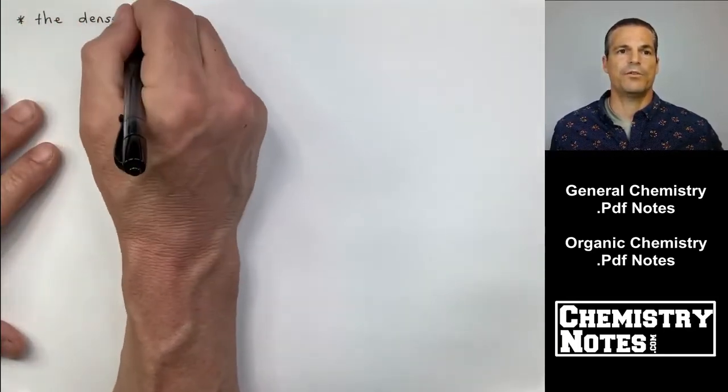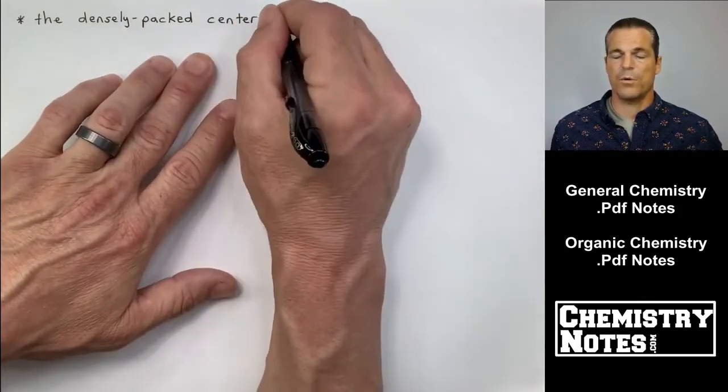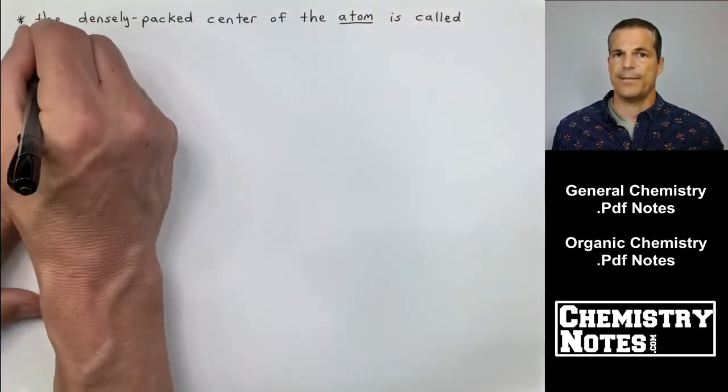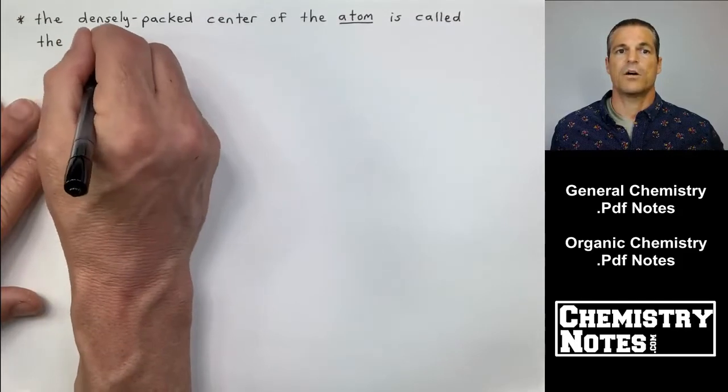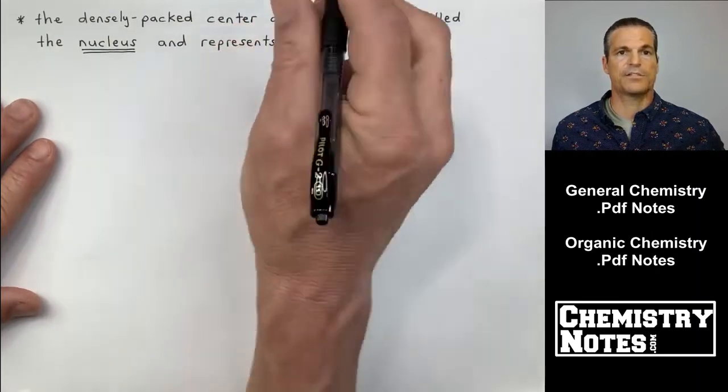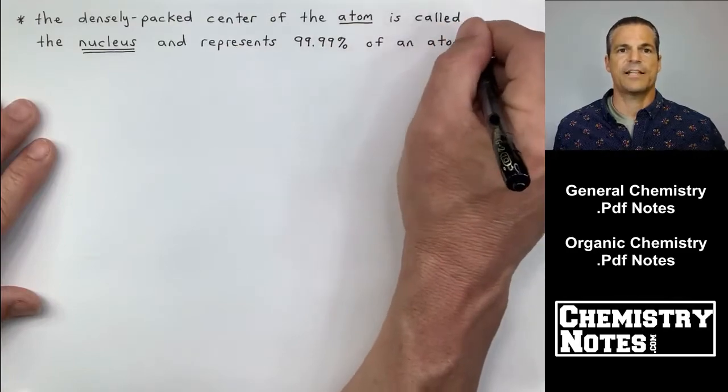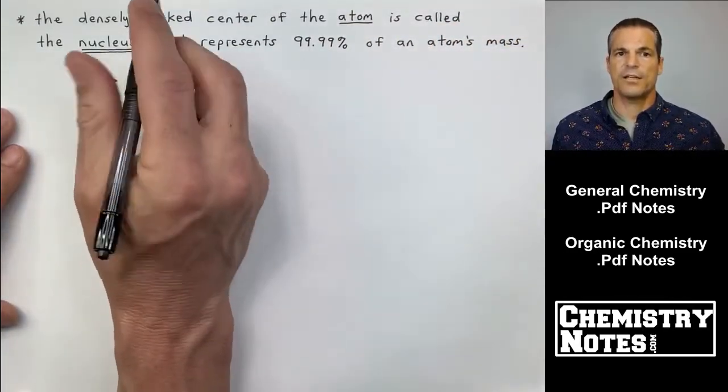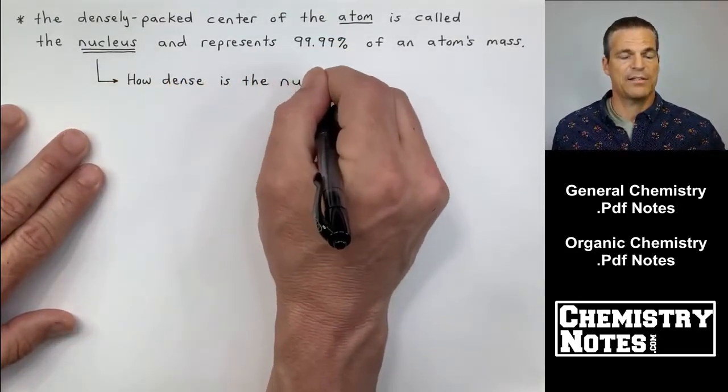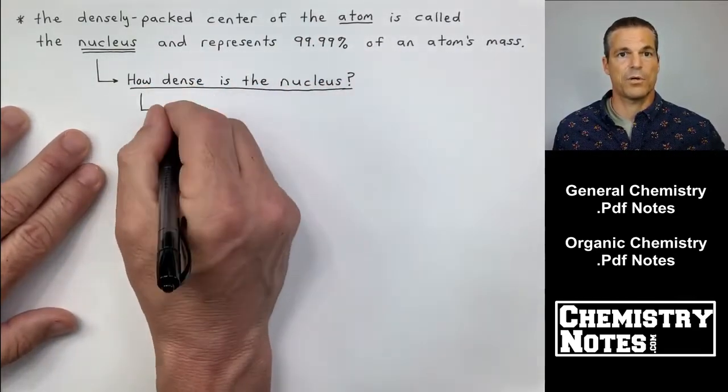At the top of a new page of notes here, we want to make some notes on what we've just witnessed. The first star says the densely packed center of the atom is called the nucleus. Again, this is 1911, Rutherford and his gold foil experiment, discovery of the nucleus. The densely packed center of the atom is called the nucleus, and that nucleus represents 99.99% of an atom's mass. Essentially all of the atom's mass is the nucleus. In other words, protons and neutrons.